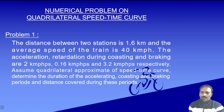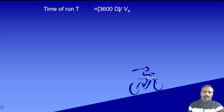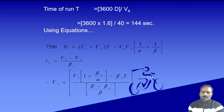We need to find the duration of acceleration t1, coasting t2, and braking t3, plus the distance covered during each period. First we find the total time of run: T = 3600 × D / Va = 3600 × 1.6 / 40 = 144 seconds. Now we write down the two equations for the quadrilateral speed-time curve: 7200D = (v1 + v2)·T − v1·v2·K.